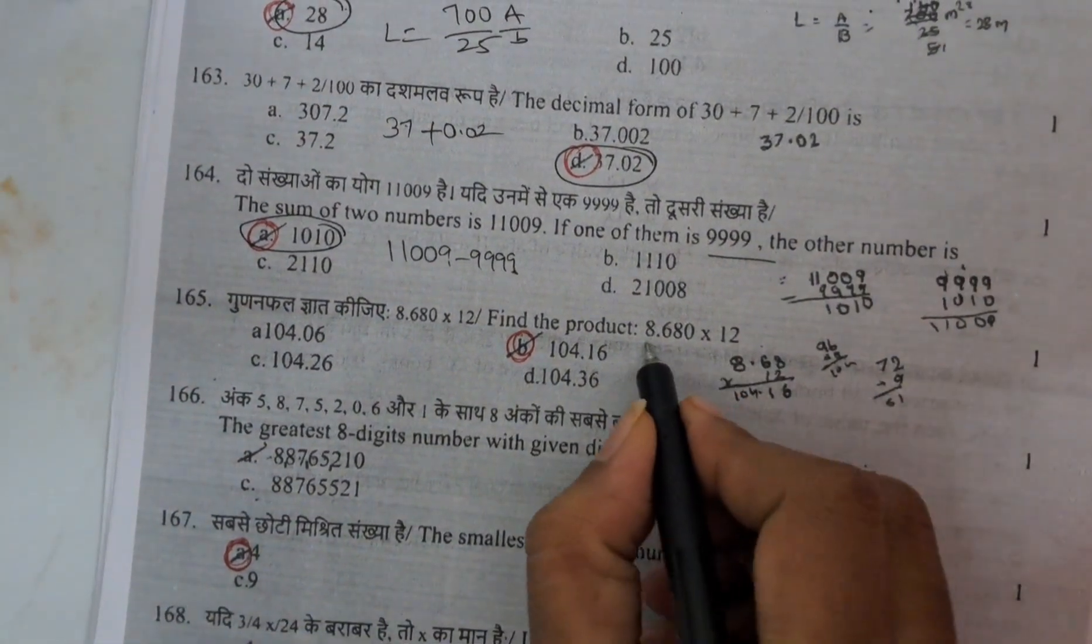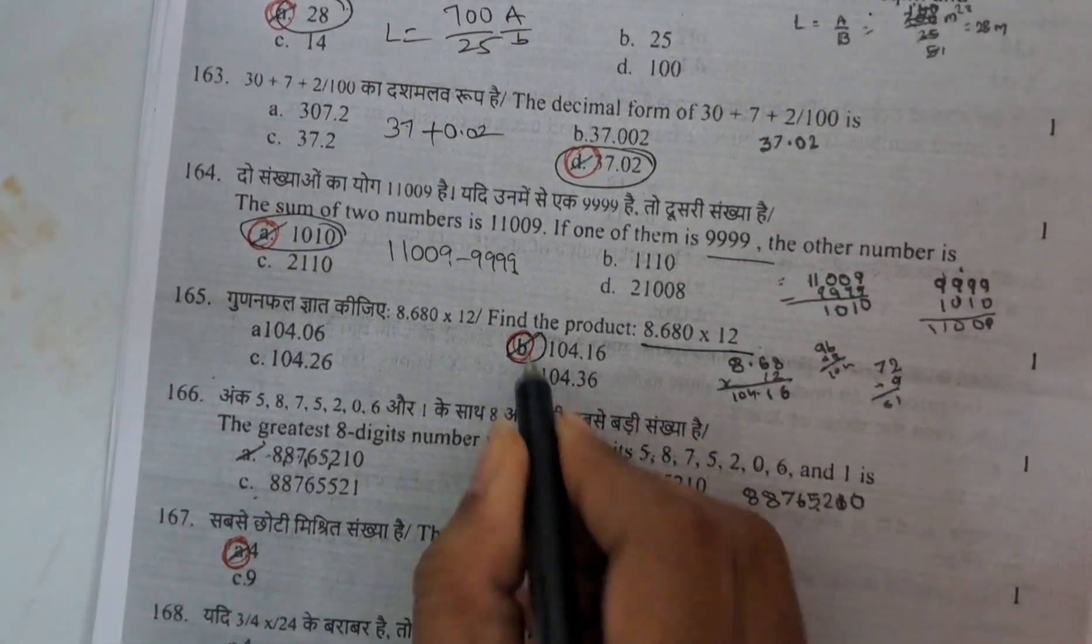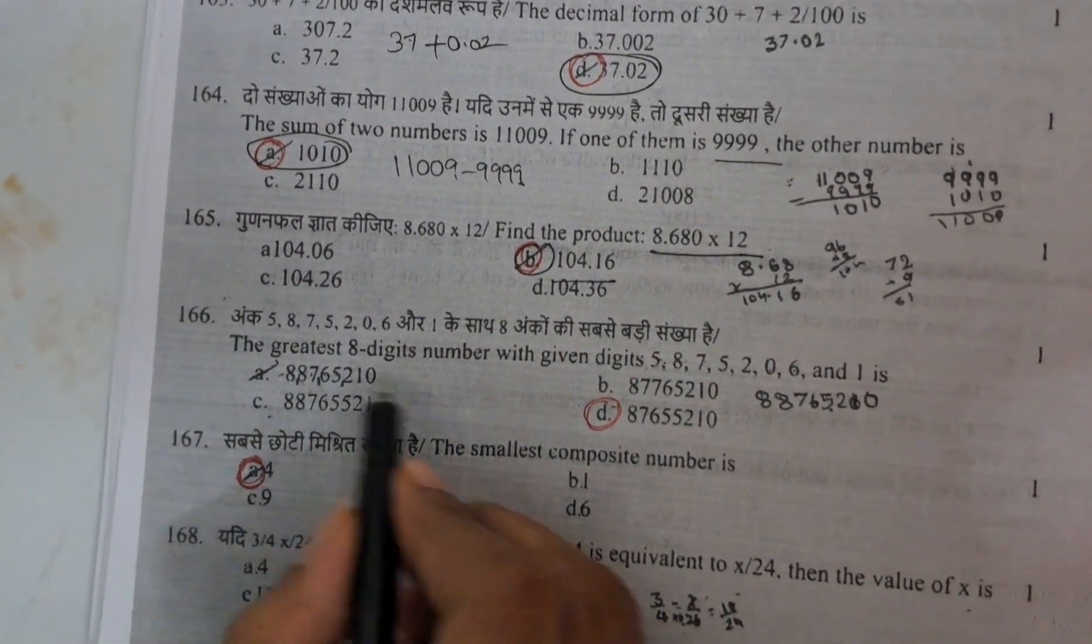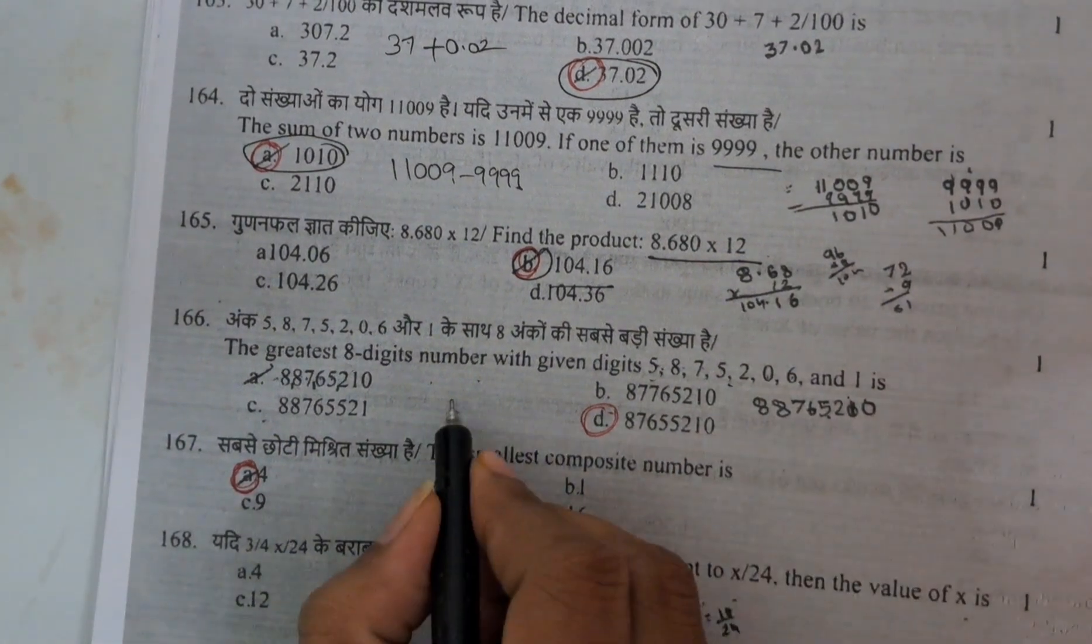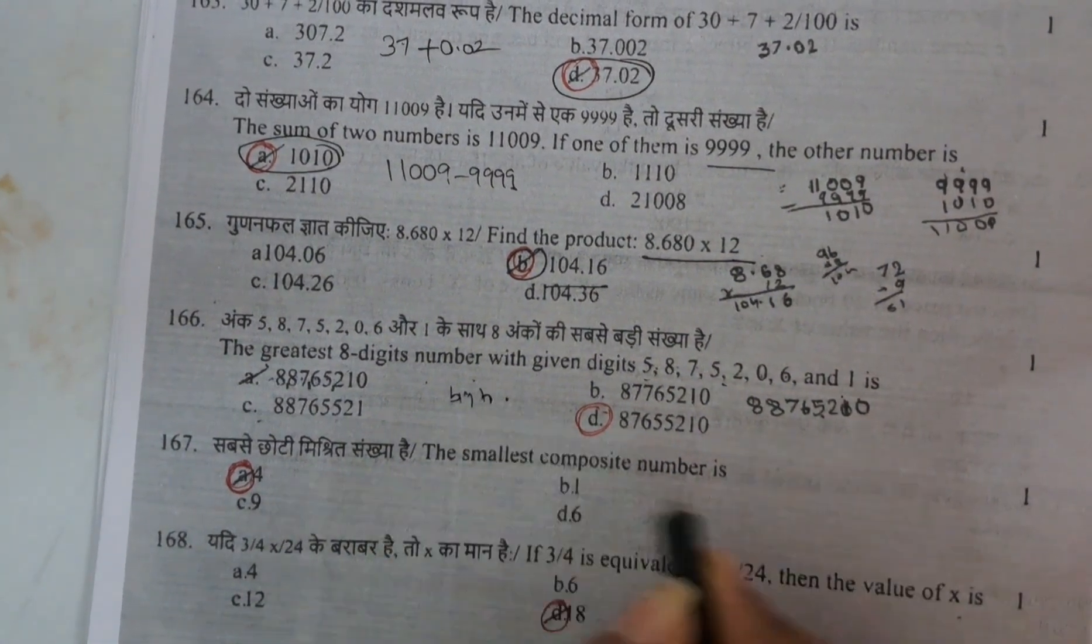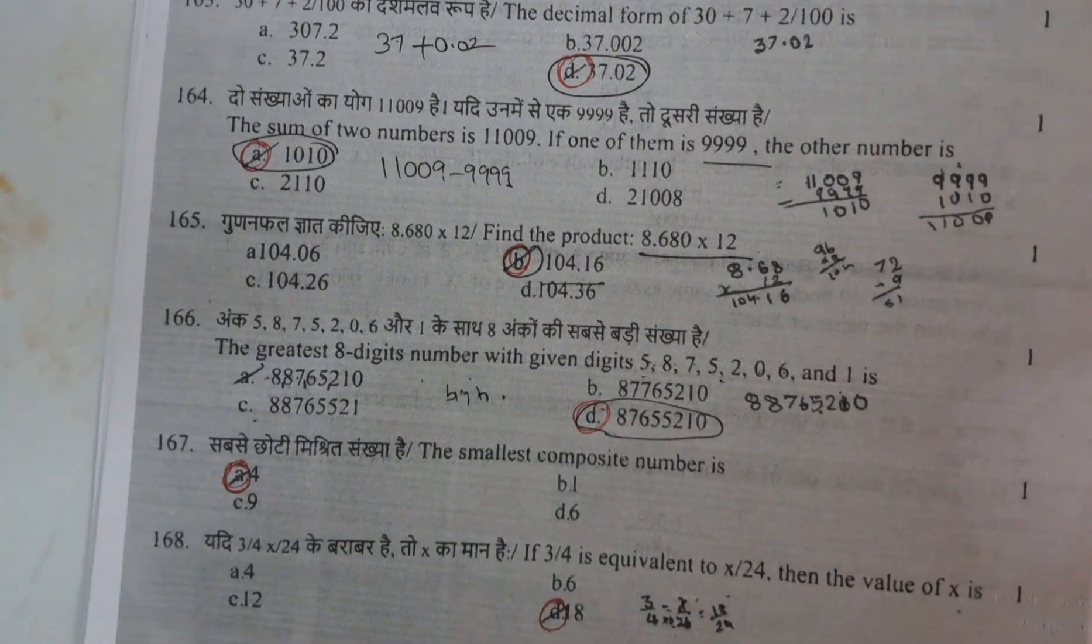And next the product. Here it is the product simple. The answer is 10416. And next the greatest 8 digit number. Here they gave 8 digits the greatest. Greatest means if you write big to small digit, then you will get the greatest number. The answer is D.